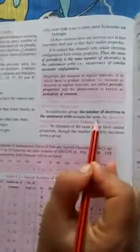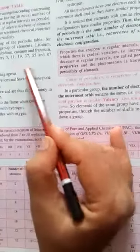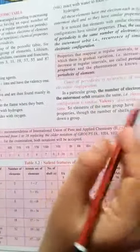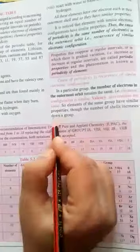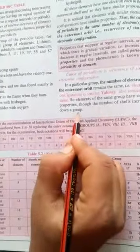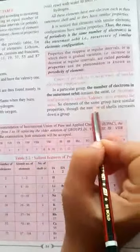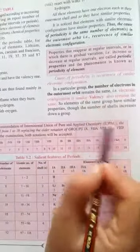Here the number of electrons in the outermost orbit, as we see in the example 3, 11, in the outermost orbit they are having only one electron. The electronic configuration is similar, valence also remains the same. So the elements of the same group have similar properties, though the number of shells increases down a group. Valency also shows the same valency.